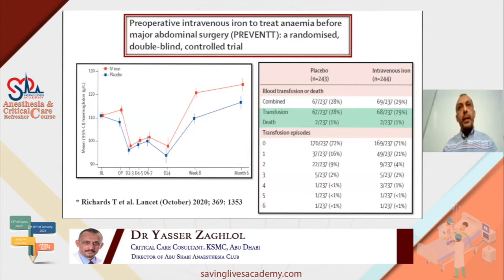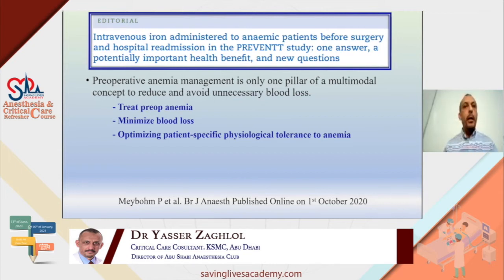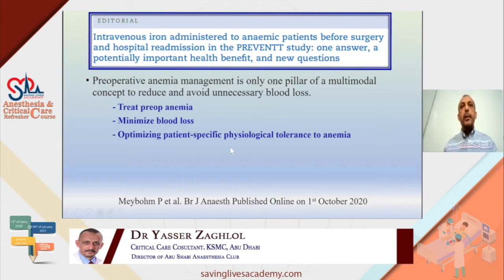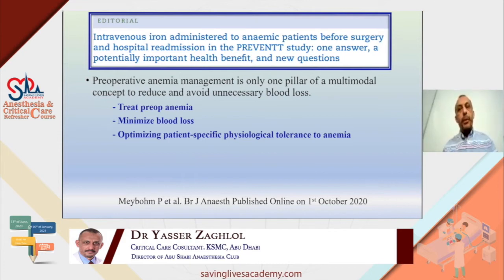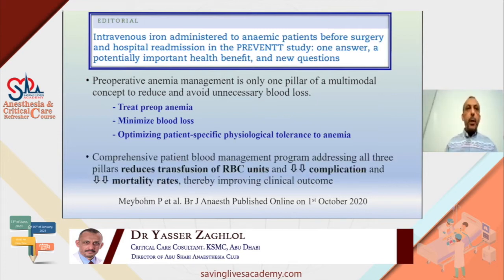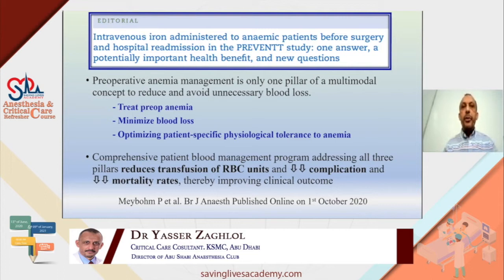An editorial in the British Journal of Anaesthesia discussed why iron therapy alone may not change outcomes much, because to truly improve outcomes you must target three pillars: treat preoperative anemia, minimize intraoperative blood loss, and optimize the patient's physiological tolerance for anemia — maintaining normovolemia and correcting metabolic acidosis. If we follow this three-pillar program, we will reduce blood transfusion, reduce complications, reduce mortality, and improve clinical outcome.